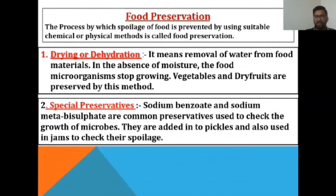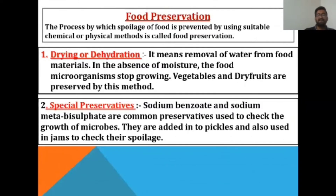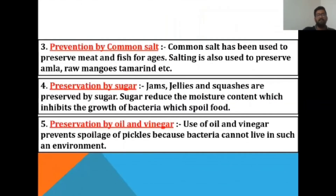The second method uses chemical preservatives such as sodium benzoate and sodium metabisulphite, which are added to pickles and jams to check the growth of microbes. The third method is preservation by common salt, which has been used to preserve meat and fish for ages. Salting is also used to preserve amla, raw mangoes, and tamarind.